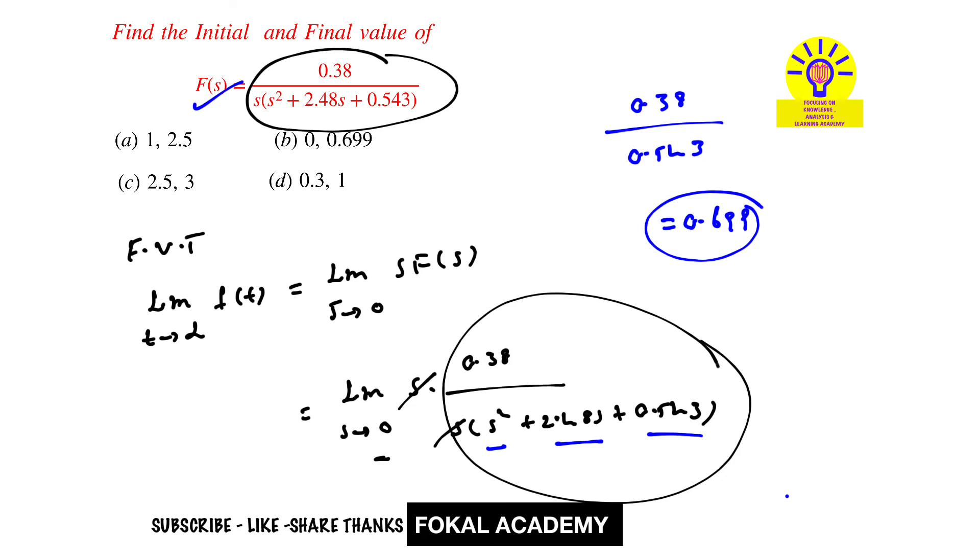So the initial value is 0 and the final value is 0.699. From the options, option B is the correct answer. This is the complete process of simplification. Thanks for watching, please subscribe, like, and share.